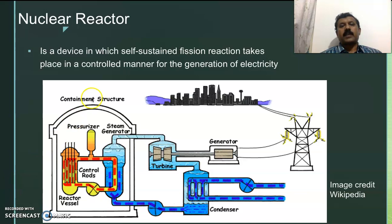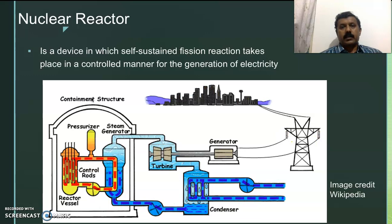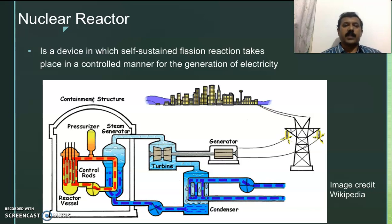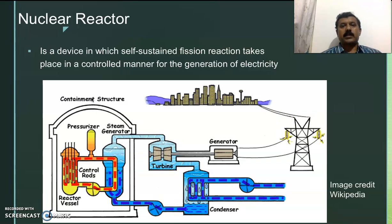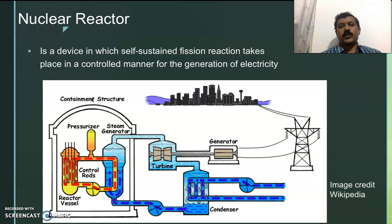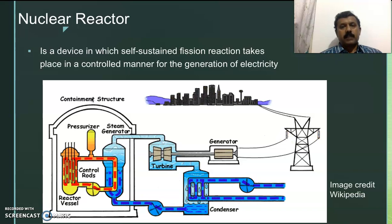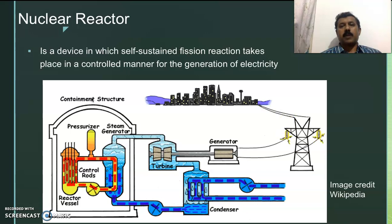A fission reactor is one in which a self-sustained fission reaction takes place in a controlled manner. Depending on the purpose for which the nuclear reactor is used, we have various classifications: power reactors, whose main purpose is the generation of electricity; breeder reactors, generally used to convert a fertile material into a fissile material; and research reactors, used for research purposes. Here we concentrate mainly on power reactors, which are basically used for power generation.